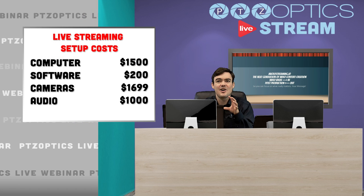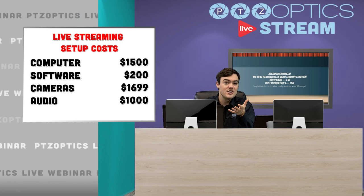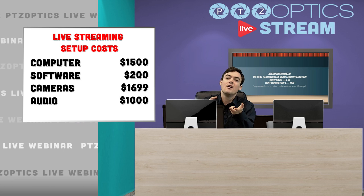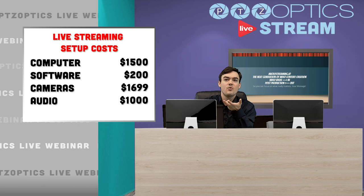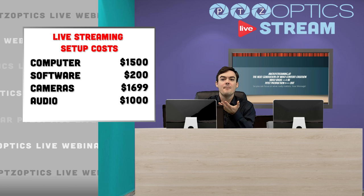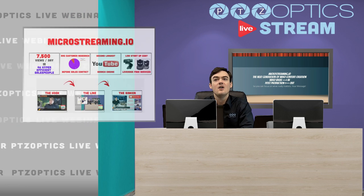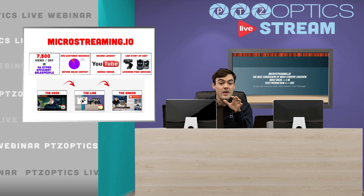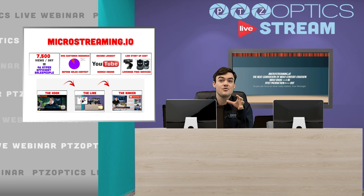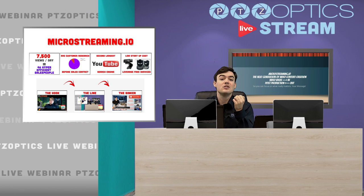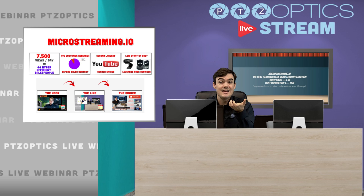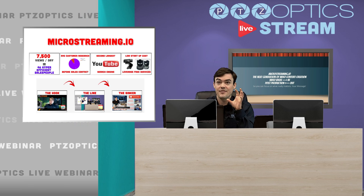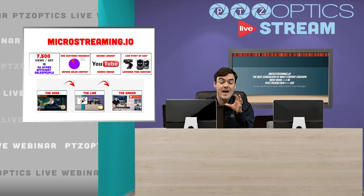Just really quickly we're going to talk about budgets — what you need. Obviously you need a computer, type of software, camera, microphone — we're going to talk about all that. We're also going to briefly point you to microstreaming.io, where if you want to learn about the techniques of live streaming and micro streaming, you can take a look at that.